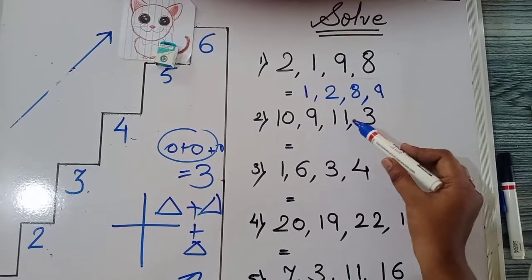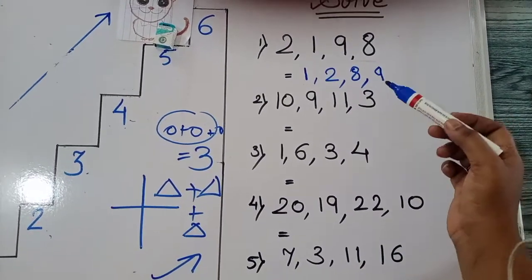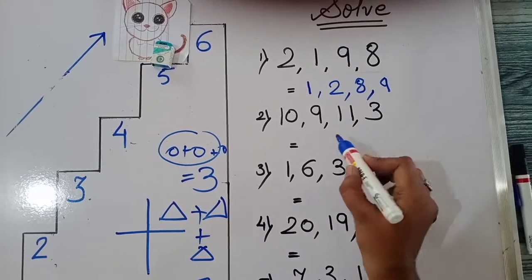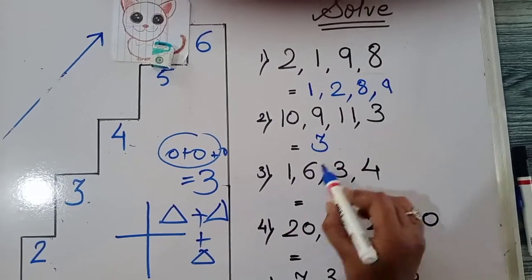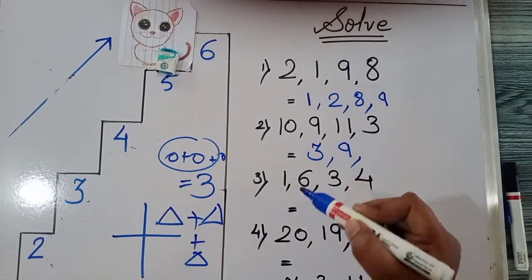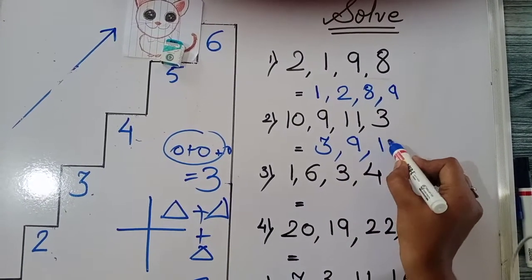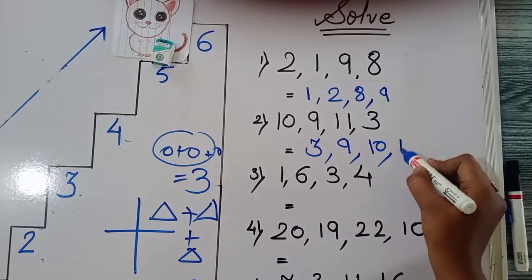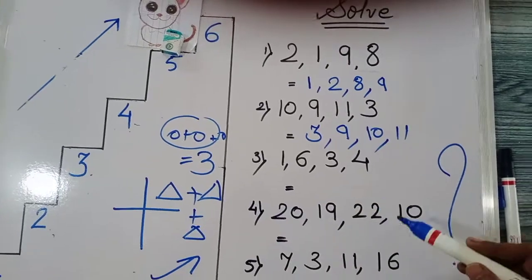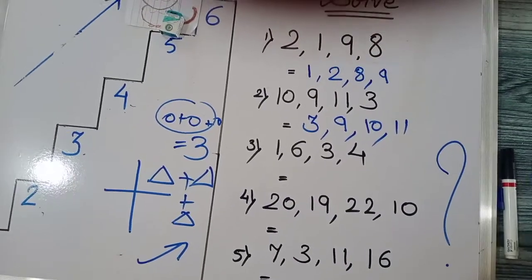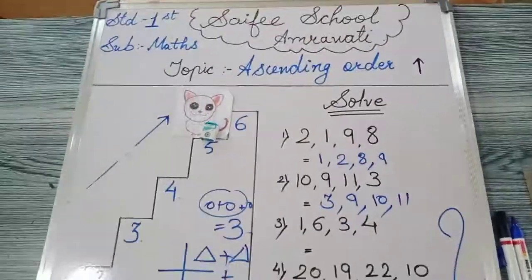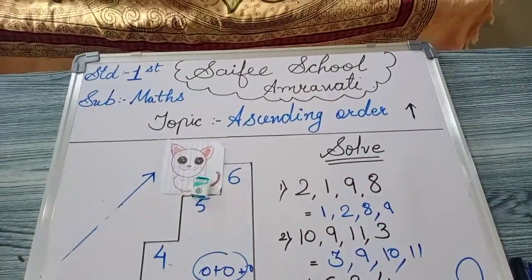Next is, 10, 9, 11 and 3. So which number will come first? Sab se chota number kaun sa hai? 3. Usse bada number kaun sa hai? 9. Usse bada number kaun sa hai? 10. Usse bada? 11. So kids, you have to solve this exercise. Other problems you are going to solve in your notebook. Ascending order means number chote se bada hota hai.